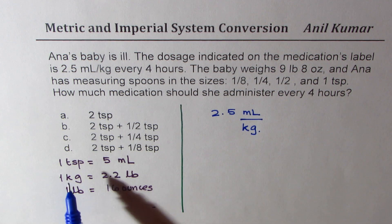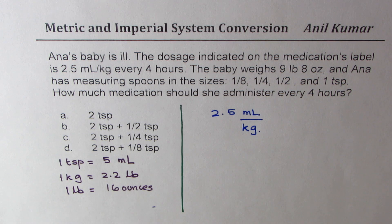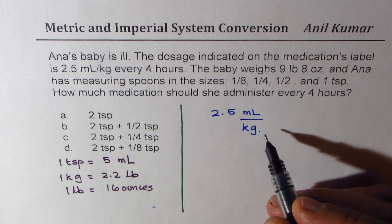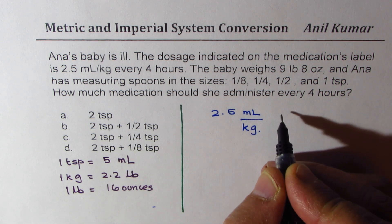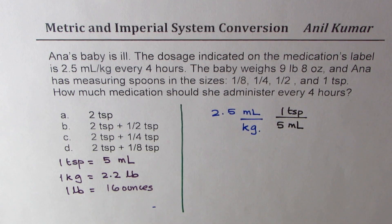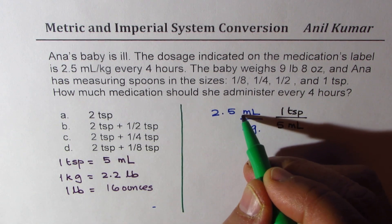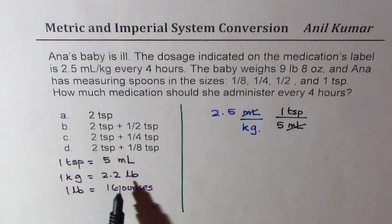We know 1 teaspoon is 5 milliliters. So if I want to cancel milliliters, I should multiply by 1 teaspoon over 5 milliliters. As soon as I do that, the milliliter units cancel and we get units in teaspoons. Now we need to get rid of kg. We know 1 kg is 2.2 pounds, so we write 1 kg over 2.2 pounds.